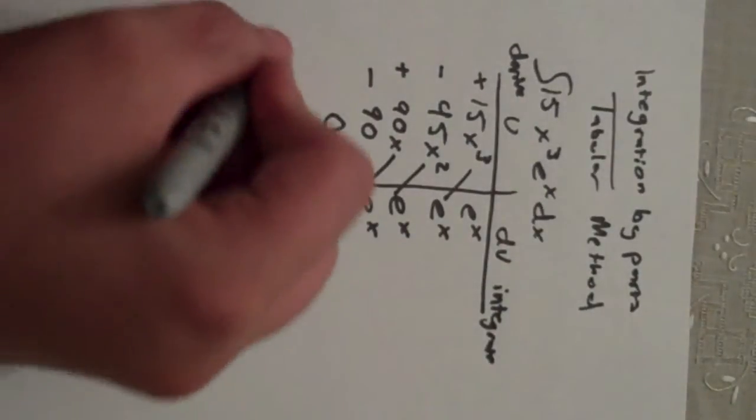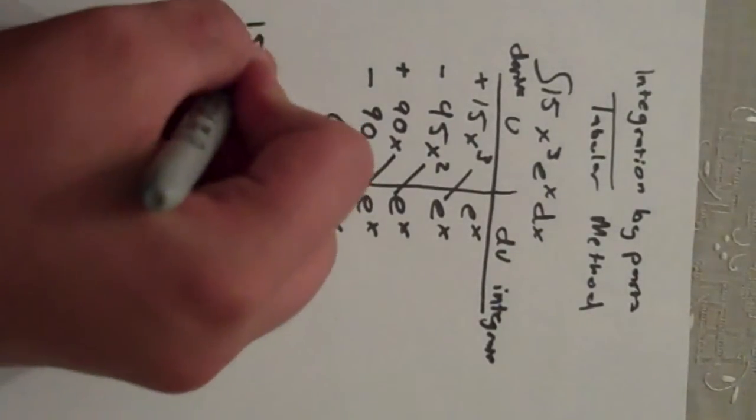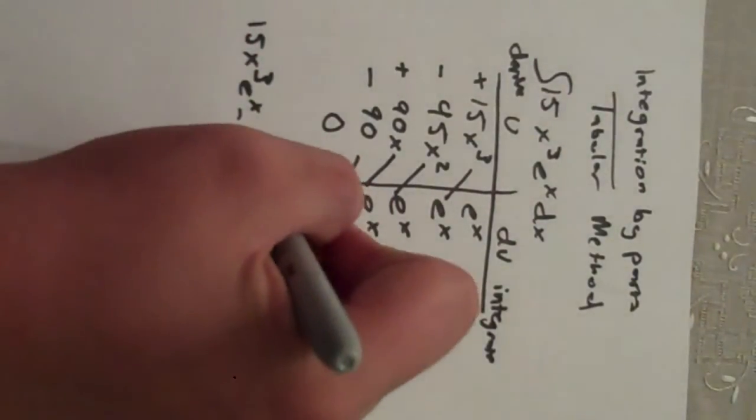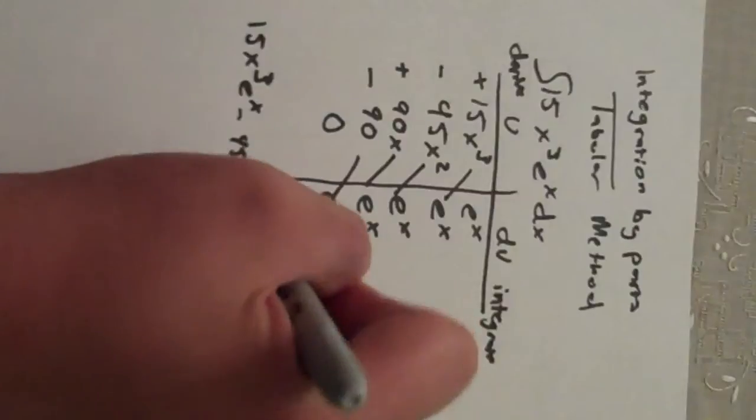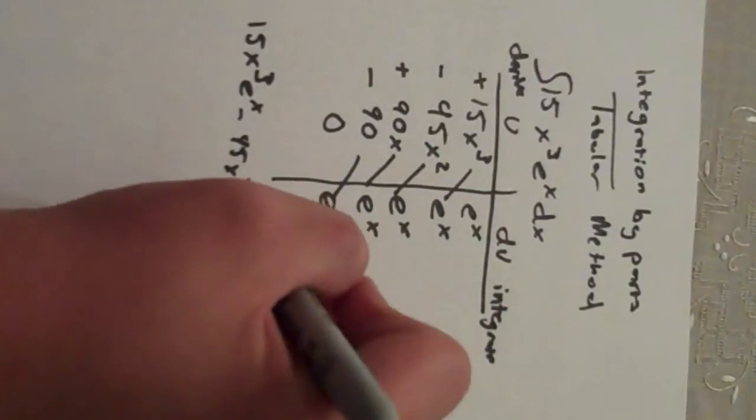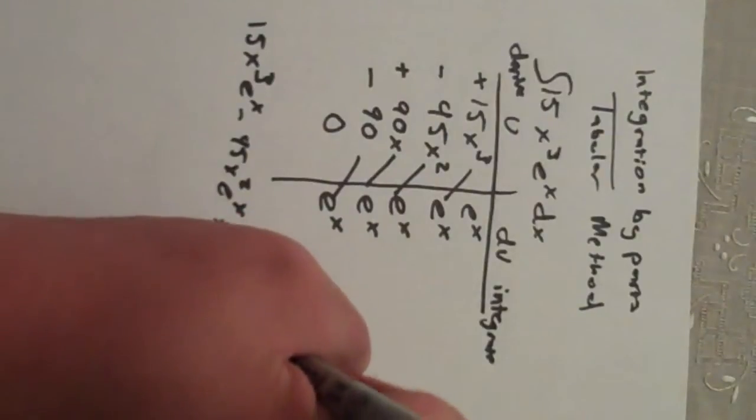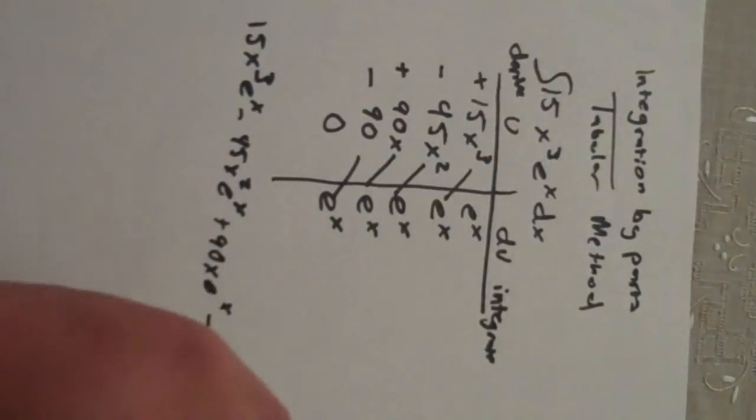So the answer here is 15x cubed e to the x minus 45x squared e to the x plus 90x e to the x minus 90 e to the x and plus c.